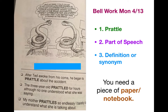Let's read that first sentence. After Ted awoke from his coma, he began to blank about the accident. He began to... what would you do? You woke up from a coma, you had an accident, you would begin to talk about it, right? To explain what happened. So, to prattle means to talk.